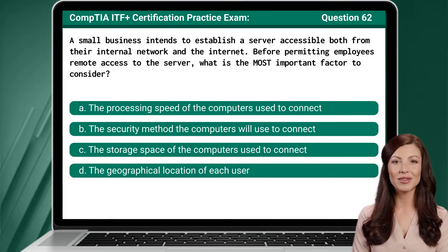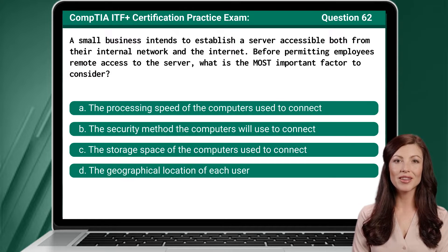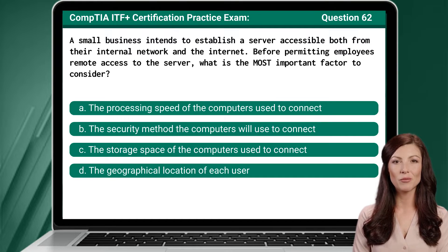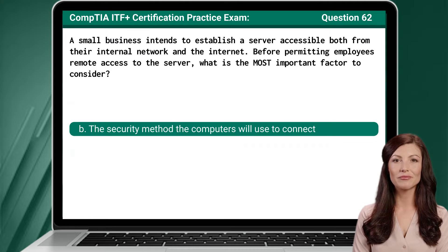Question 62: A small business intends to establish a server accessible both from their internal network and the internet. Before permitting employees remote access to the server, what is the most important factor to consider? The answer is B: the security method the computers will use to connect.